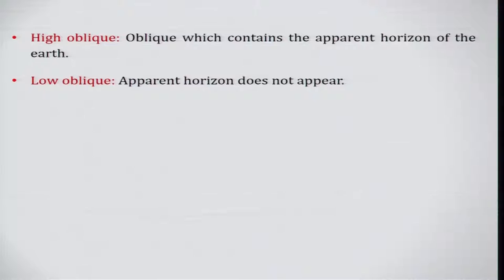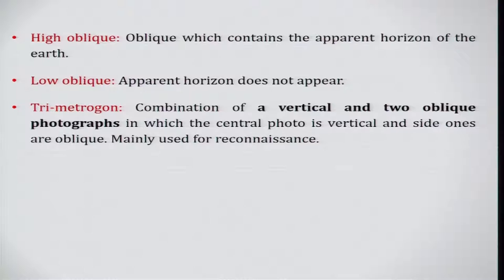There are different types of oblique photographs. High oblique contains an apparent horizon of the earth, while in low oblique the apparent horizon does not appear. Trimetrogon is a combination of vertical and oblique photographs in which the central photo is vertical and the side ones are oblique. Convergent is a pair of low oblique photographs taken in sequence along a line of flight, covering essentially the same area with their axes tilted at a fixed inclination from the vertical.